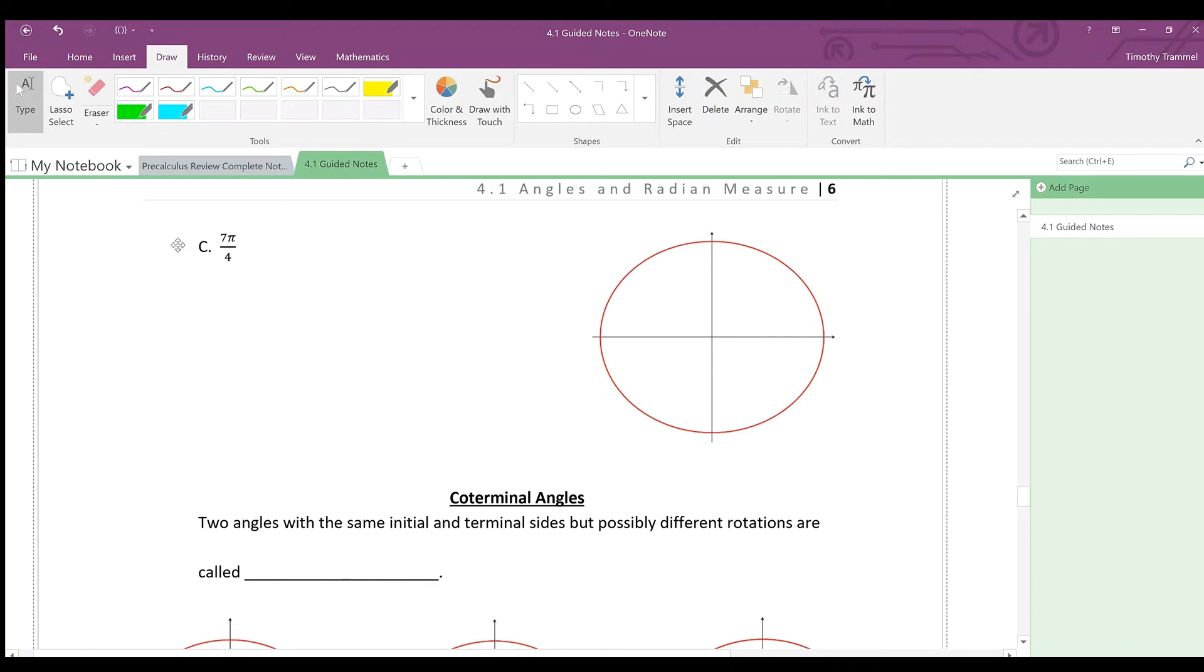Now that we're to part C, I want you to pause the video for a moment and try to sketch this angle here, 7π over 4.